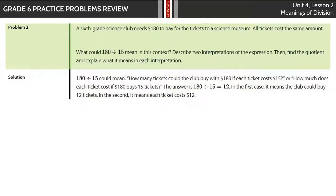In problem 2, a 6th grade science club needs $180 to pay for the tickets to a science museum. All the tickets cost the same amount. What could 180 divided by 15 describe in this context? Describe 2 different interpretations of the expression and then find the quotient and what it means for each interpretation. Well, they're saying 180 divided by 15 could be how many tickets the club could buy with $180 if each ticket cost $15. So if you were to take $180 and divide it by $15, that gets you 12 tickets. That's one case.